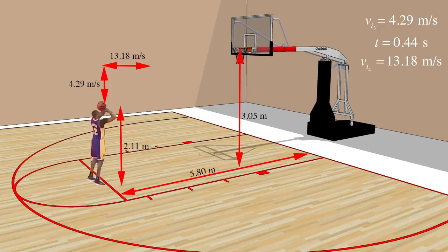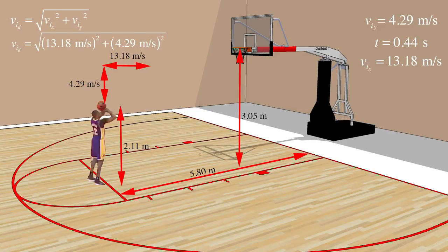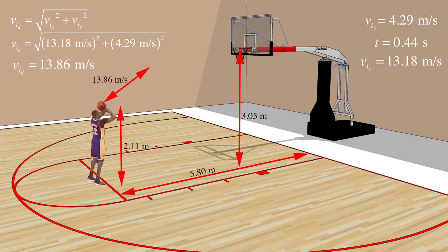Now we can find the initial velocity at which Dwight throws the ball in the diagonal direction. We can use the Pythagorean theorem to find this value. After plugging in our values and solving, we come to the conclusion that the velocity in the diagonal direction was 13.86 meters per second.